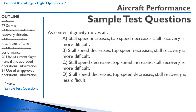Last question on center of gravity: as CG moves aft, stall speed increases — not true, because with an aft CG there is more net lift from the wing so stall speed decreases. Top speed increases because a lower angle of attack is needed, reducing drag. But stall recovery is more difficult. The correct answer is C. That concludes this second lesson on flight operations — thanks for joining, and we'll see you in the third lesson next.